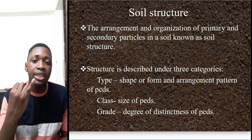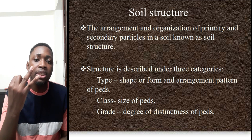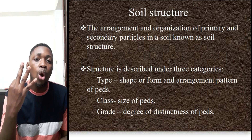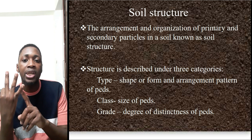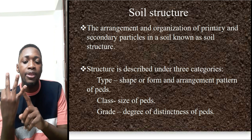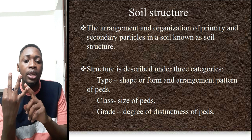Soil structure is categorized into three main groups: it is categorized into type, it is categorized into class, and it is categorized into grade. When we are simply talking about the shape and arrangement pattern of soil aggregates,